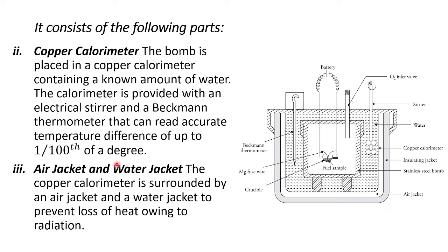The last part is the air jacket and water jacket. The copper calorimeter is surrounded by an air jacket and a water jacket to prevent loss of heat owing to radiation. Those are the parts of the bomb calorimeter.